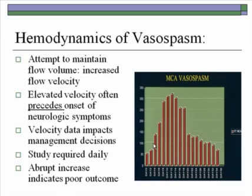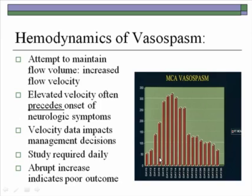The hemodynamics of vasospasm: the body attempts to maintain flow volume by increasing flow velocity to deliver blood to the brain. The elevated velocity often precedes the onset of neurologic symptoms, which is very helpful because management can be changed — medications and fluid volumes adjusted to help maintain perfusion. Velocity data directly impacts management decisions and the study is usually required every 24 hours. An abrupt increase in flow velocity from one day to the next indicates a poor outcome. We track the mean flow velocity on a flow chart in the patient's chart so physicians can see changes over time.